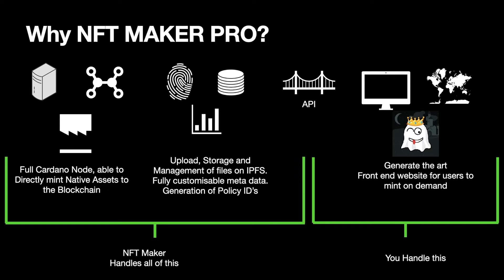That leaves you with two essential goals: generate the art and the associated data. For example, this happy little Boo here — he's white, has the cheeky smile, the gold crown, and the castle background — you need to generate both that image and the associated data. You also have to set up the front end, which is normally a website for people to mint. But that's merely needing them to click a button — the actual minting process is handled completely by NFT Maker Pro as long as you can send them the request.